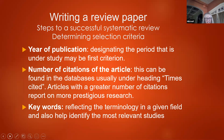When determining selection criteria, there are a number of key concepts to keep in mind. First, the year of publication — designating the period under study, often listed in the aims, such as articles from 2000 to 2015. The number of citations of the article can be found in databases usually under the heading 'Times Cited,' and articles with a greater number of citations report on more prestigious research. Keywords — the terminology in a given field — can help identify the most relevant studies.